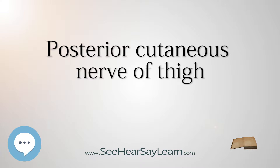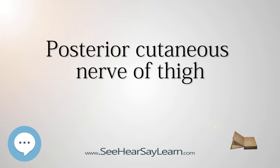Structure. The posterior cutaneous nerve of the thigh is a nerve from the sacral plexus. It arises partly from the dorsal divisions of the first and second, and from the ventral divisions of the second and third sacral nerves, and issues from the pelvis through the greater sciatic foramen below the piriformis muscle.